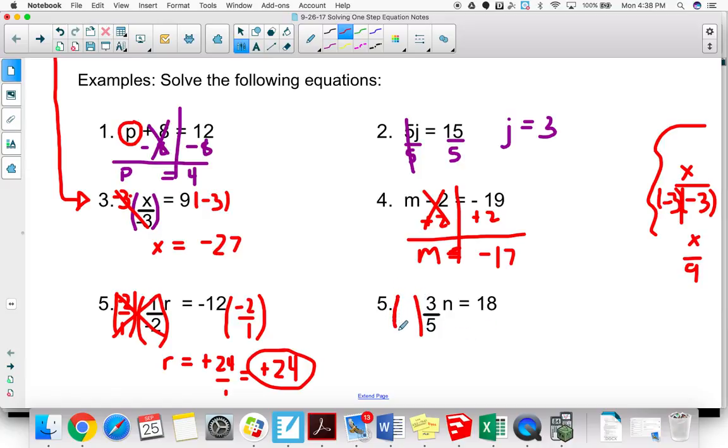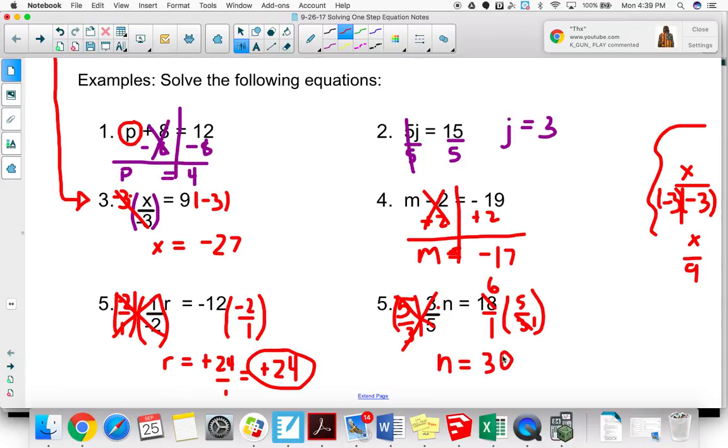5 is very similar. We want the 3 fifths to cancel out. So since this was multiplied by 3 fifths, I'm going to multiply by 5 thirds. And we're going to do that to both sides. So 5 over 3. And my 5s cancel. My 3s cancel. N equals. And I'm going to put 18 over 1. And that way it's easier to reduce my fractions. 3 goes into 18 six times. So I'm just reducing that. 3 goes into 3 once. 6 times 5 is 30. 1 times 1 is 1. So I'm not going to put divided by 1 because it doesn't change.